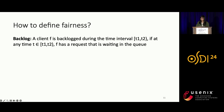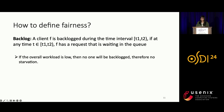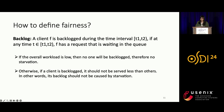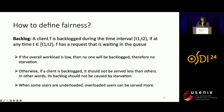The first step is to precisely define the fairness we want to achieve. The definition is based on the concept of backlog: a client F is backlogged during time interval T1 to T2 if at any time in that interval, client F has a request waiting in the queue. Intuitively, if the overall workload is low, no one is backlogged and there is no starvation. Otherwise, if a client is backlogged, it should not be served less than others — its backlog should not be caused by starvation. When some users are overloaded, they can be served more to achieve full server capacity utilization.